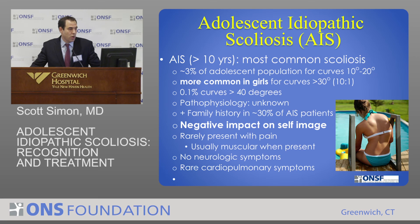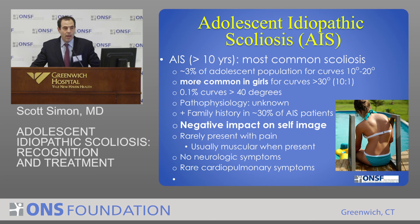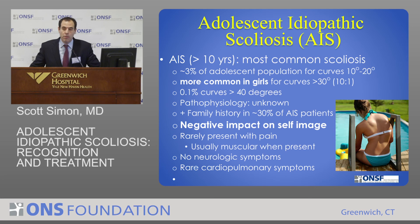There is a strong hereditary component: around 30% of patients with AIS have a first-degree relative with a spinal deformity. The main presenting symptom is negative self-image — it's cosmetic. Very rarely does a scoliotic patient come to the office complaining of back pain, and when they do, it's mostly muscular pain as the muscles drape over the prominences. Very rarely is there any cardiopulmonary issue, and there really shouldn't be any neurological deficits.